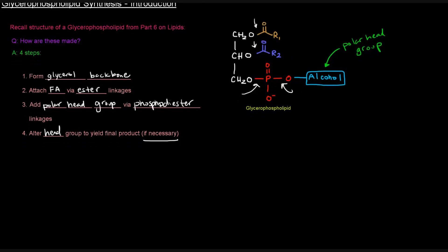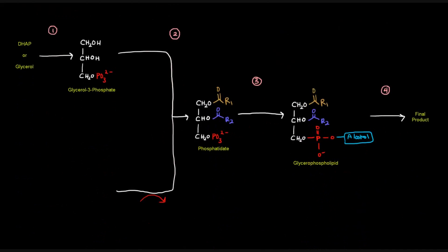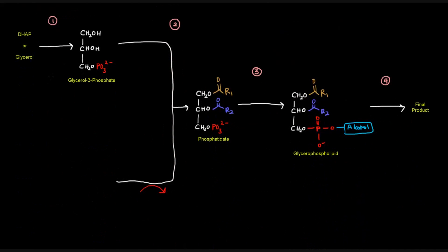So let's get an overview of what that might look like here. The first thing that we're going to do is form glycerol 3-phosphate, which is what we saw earlier with triglycerides. This is basically going to be our backbone. This first step here is making our backbone. And we get this glycerol 3-phosphate from dihydroxyacetone phosphate or glycerol.